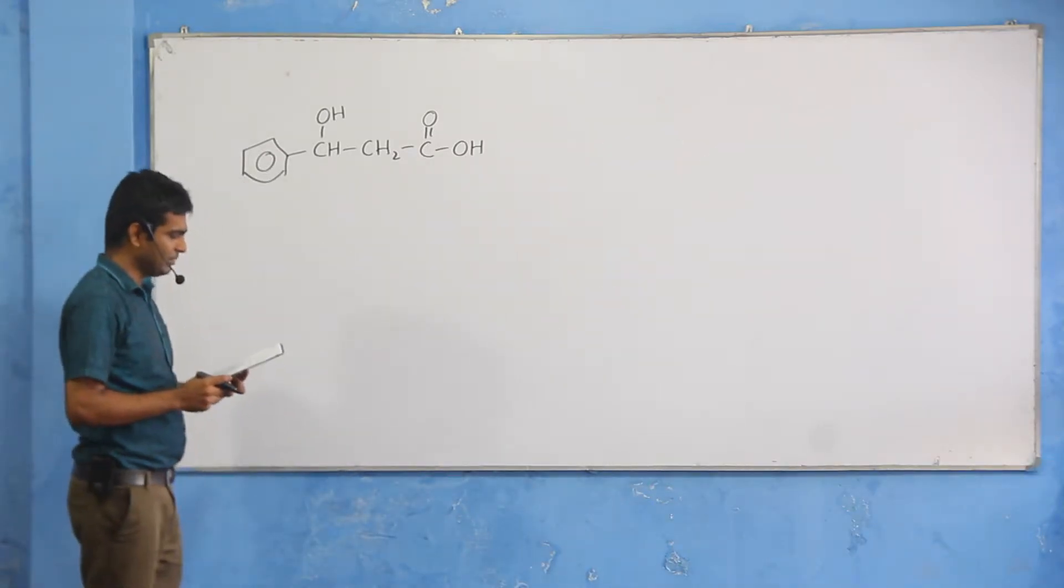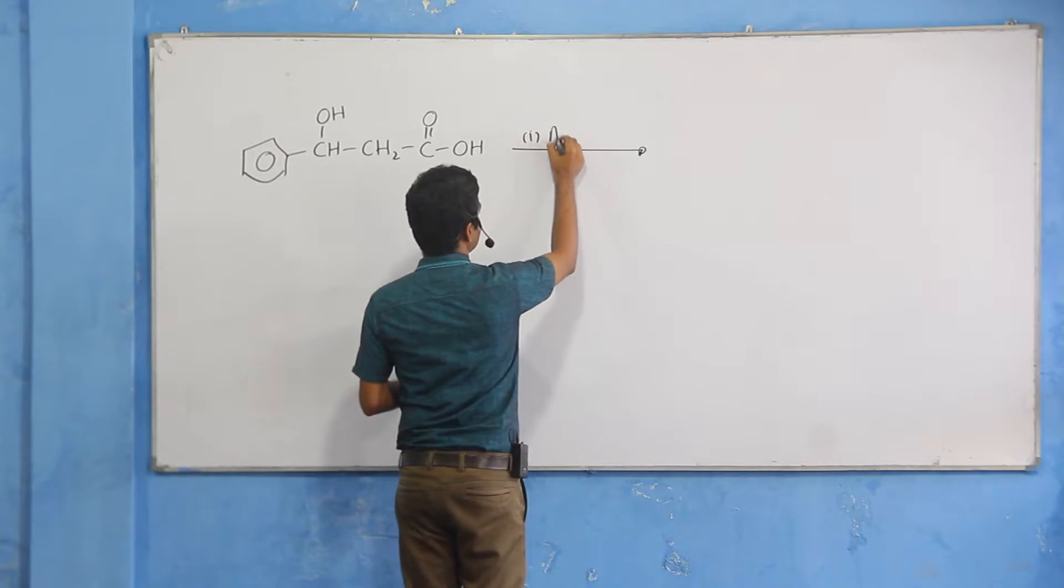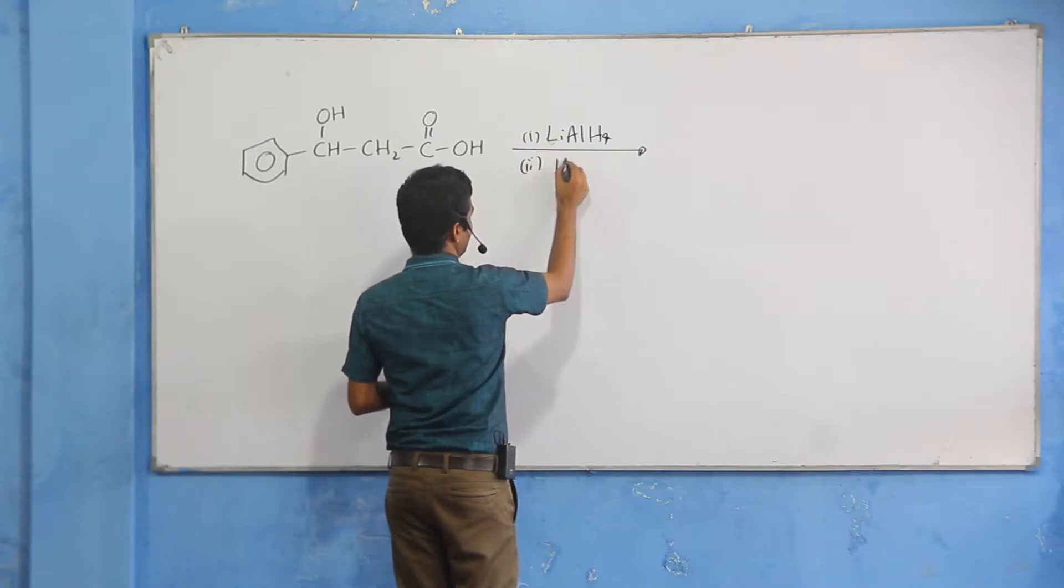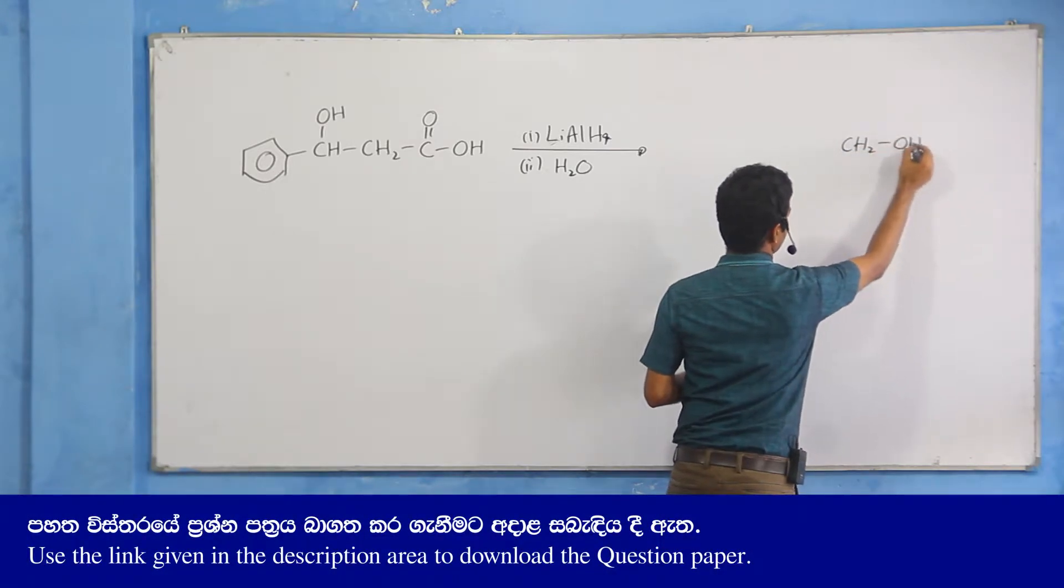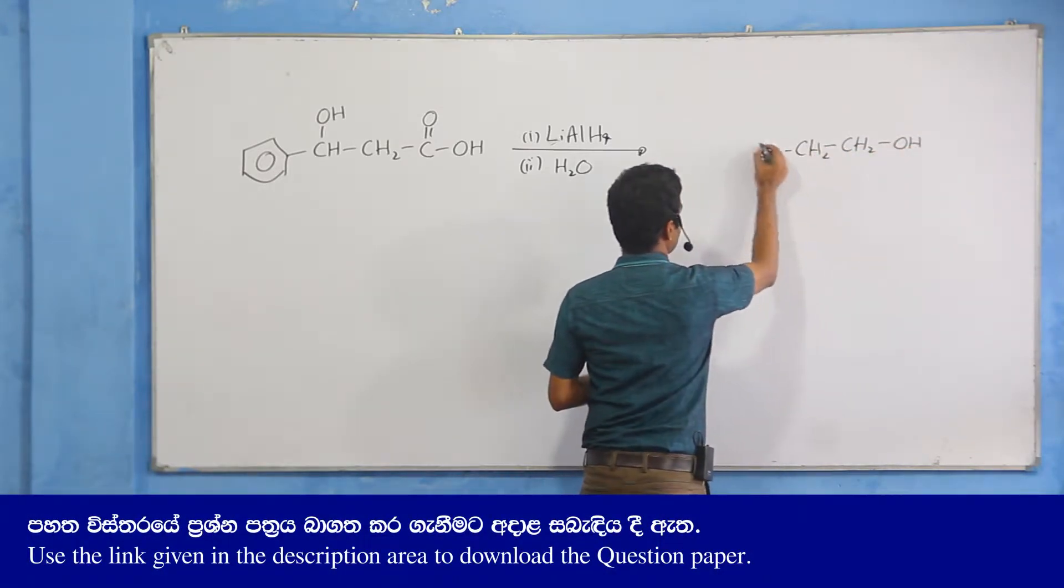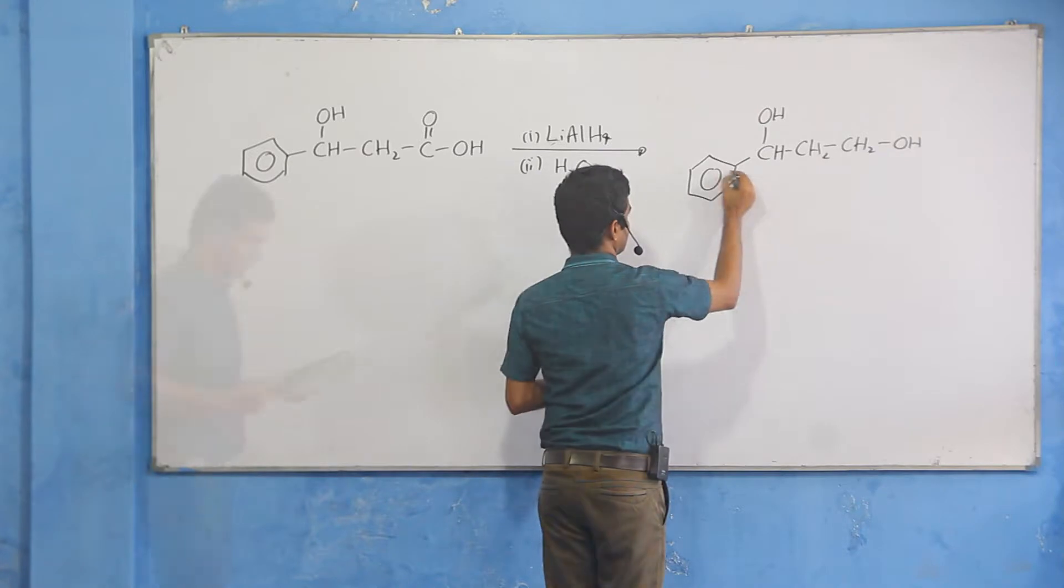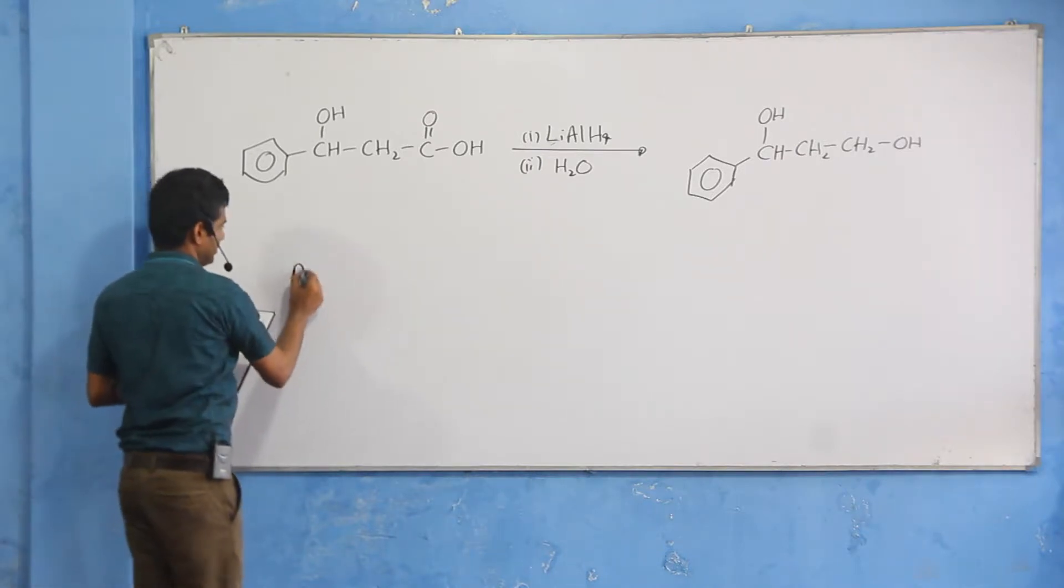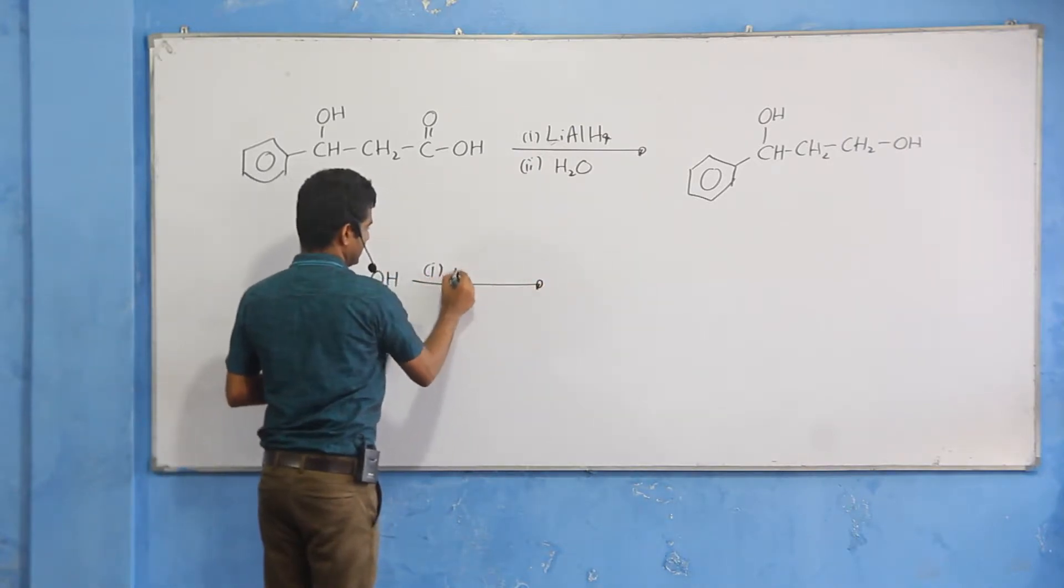Lithium aluminum hydride reacts with oxygenated compounds. When you react with lithium aluminum hydride, carboxylic acids are reduced to primary alcohols. The oxygen in the hydroxyl group, with three hydrogen atoms, is present. I am going to show you how to use lithium-aluminum hydride.